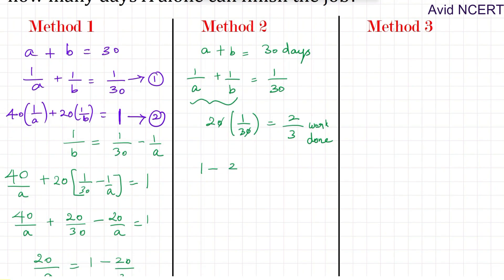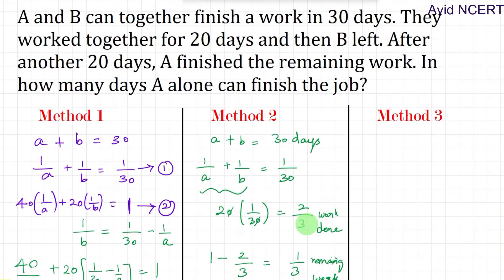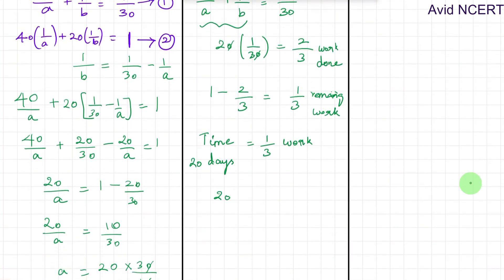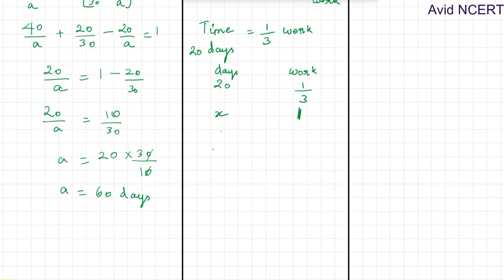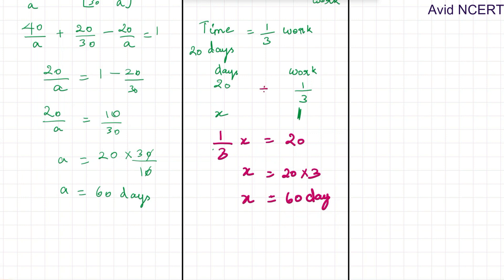So the remaining work is 1 minus 2/3, which is 1/3. That 1/3 of the work has to be done by A alone. We know A takes 20 days to finish this remaining 1/3 of work. So to complete the entire work, by cross multiplication: (1/3) times x equals 20 times 1, so x equals 20 times 3 which equals 60 days. Alternatively, days divided by work: 20 divided by (1/3) equals 60. Either way is fine.